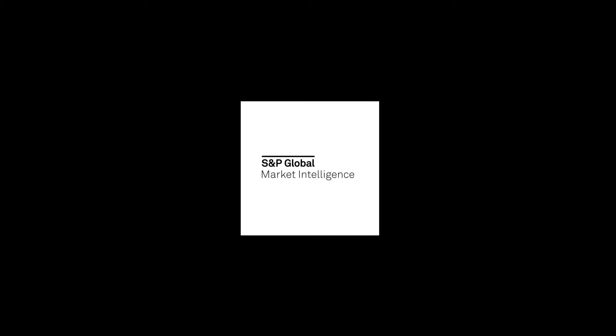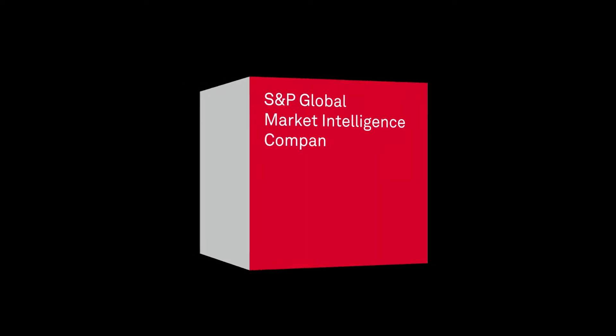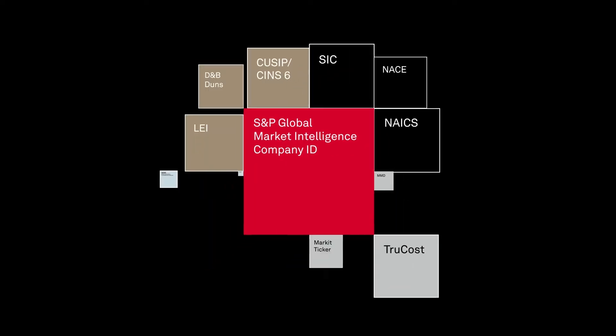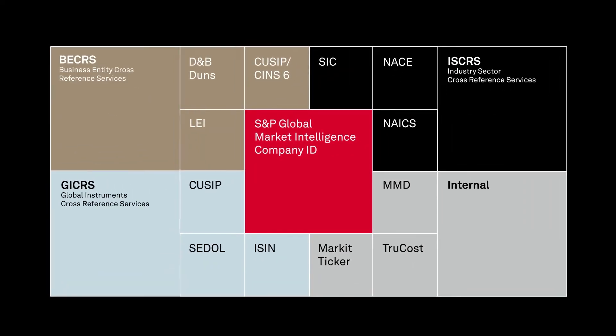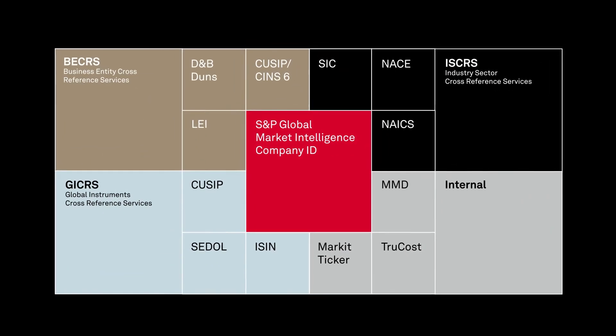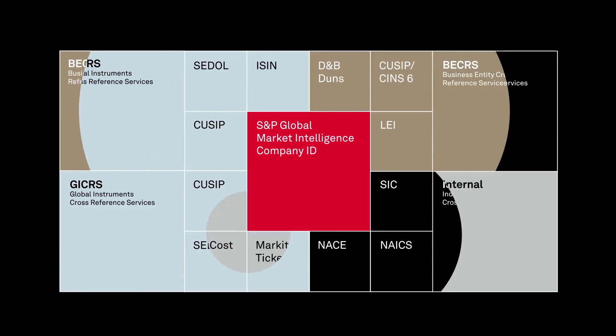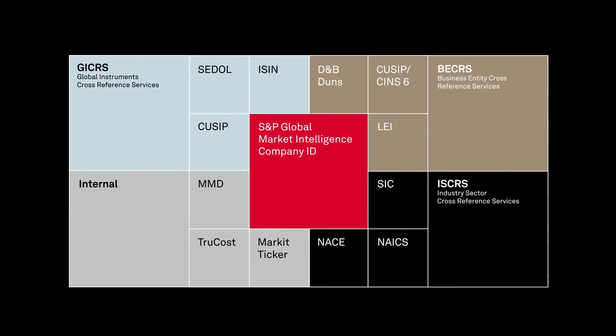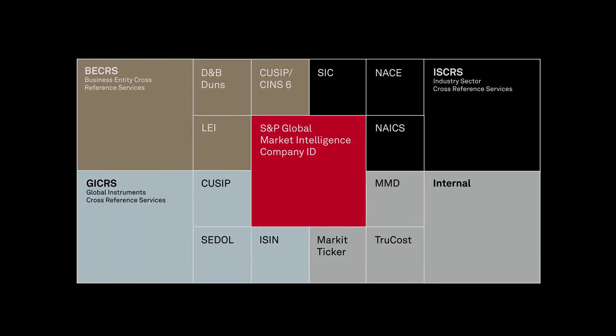S&P Global Market Intelligence offers a solution. Our cross-reference services provide you with a 360-degree view of all links between securities and entities, mapping complete ownership pathways for issuers across domestic and global parent companies.